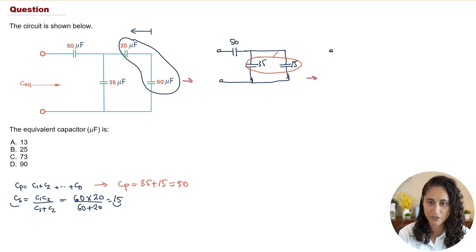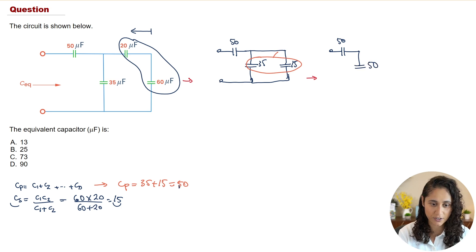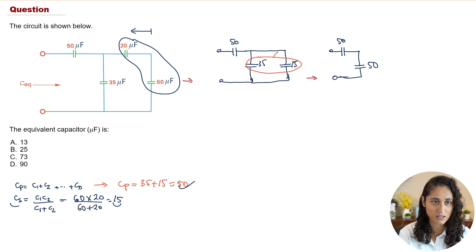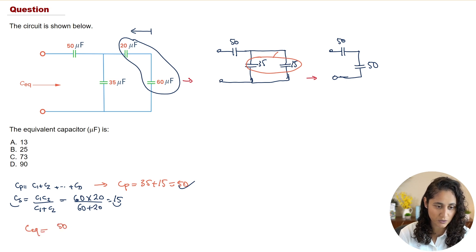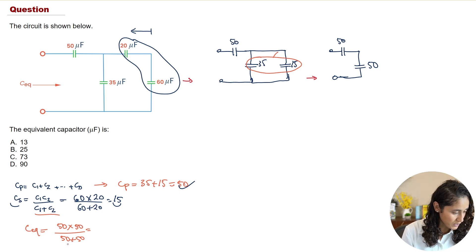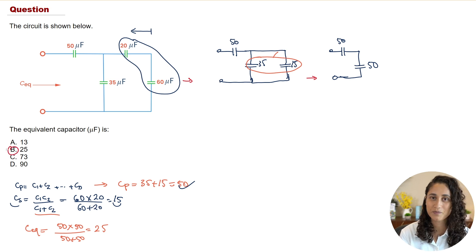After simplifying again, we have 50 µF on one side and we replace the parallel pair with the 50 µF we calculated. Now these two 50 µF capacitors are in series, giving us the final C-equivalent. Using the product-over-sum equation: (50 × 50) / (50 + 50) = 25 µF. Looking at the multiple choice, the answer is B — 25 µF.